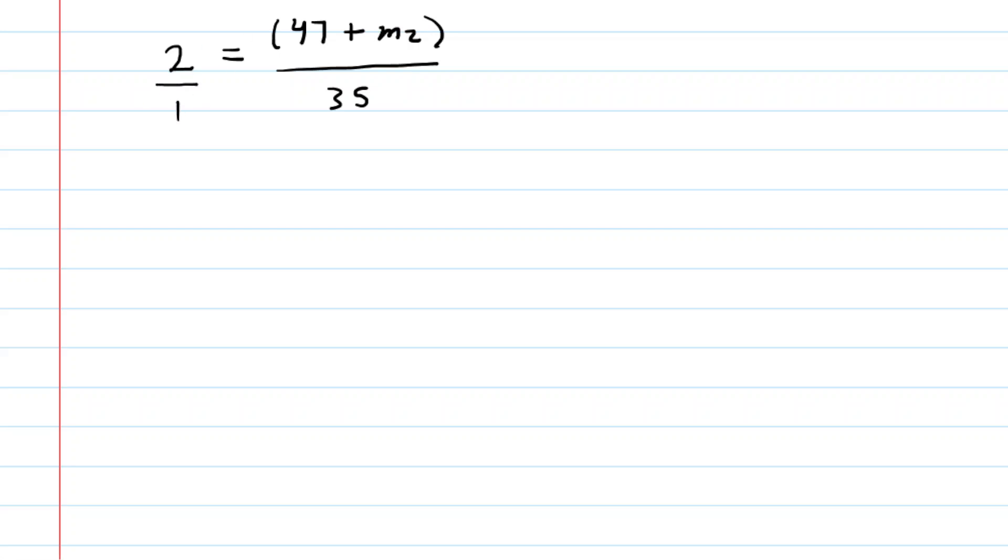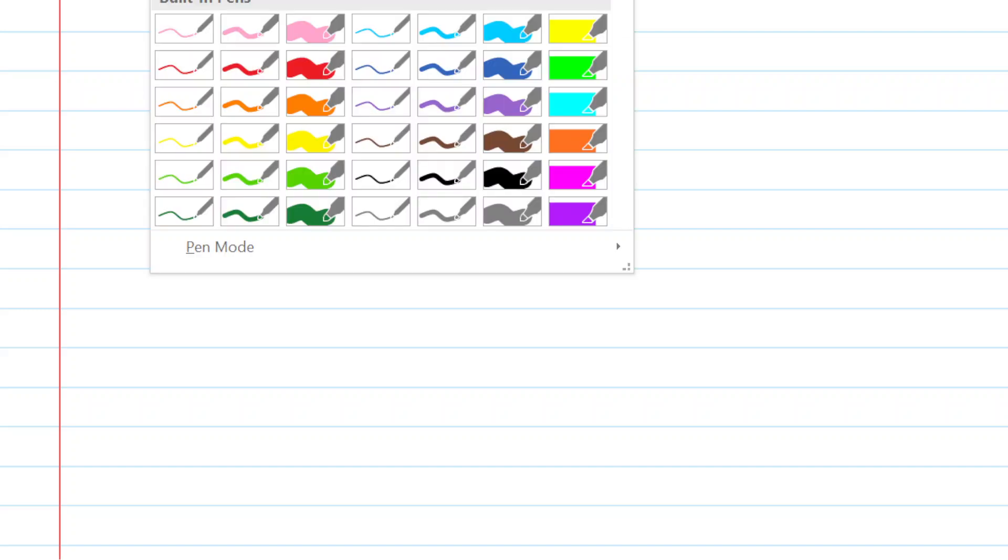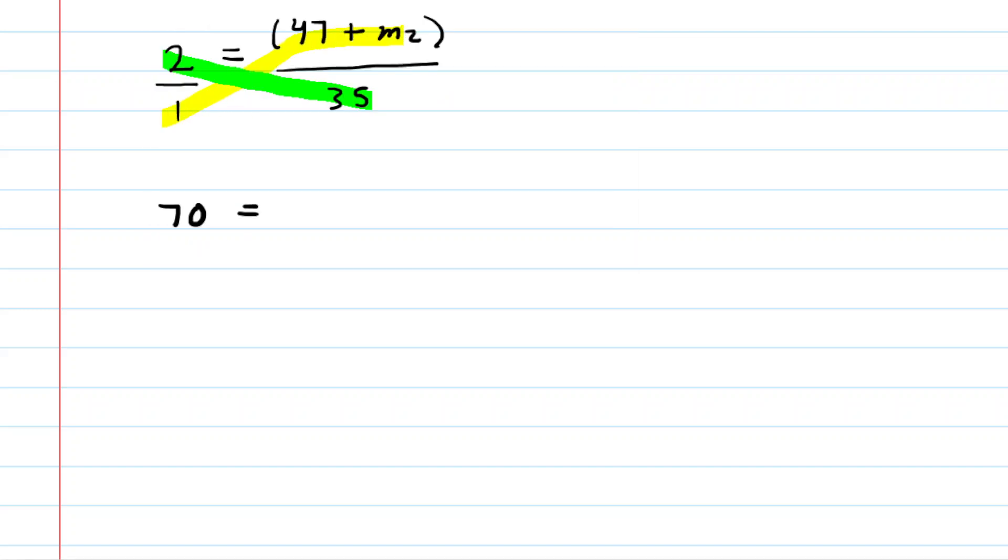Perhaps we can put the two on top of a one and then just cross multiply. So 2 times 35 would be 70. And then we cross multiply the other way. You're multiplying 47 plus m2 times 1. So that doesn't change the quantity 47 plus m2. And look at this.